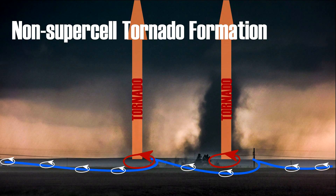As the updraft contracts, the stretching continues to increase the rotational and upward speeds, and at some point it intensifies to the level of a tornado. The updraft continues to contract until it basically withers away and our tornado ropes out. The point here is that the process starts at the ground level and builds upward to the storm's base, and it's been assumed by most meteorologists for a long time that non-supercell tornadoes follow a bottom-up process.